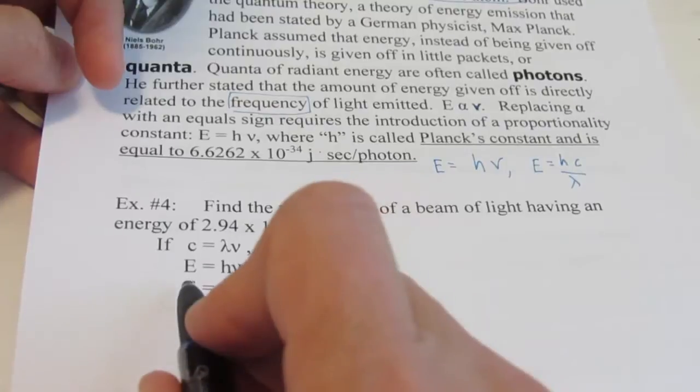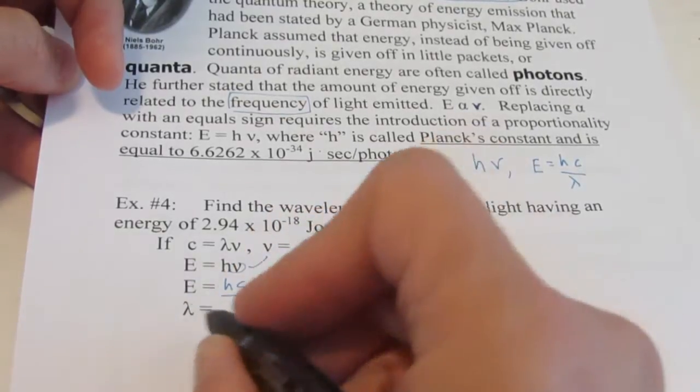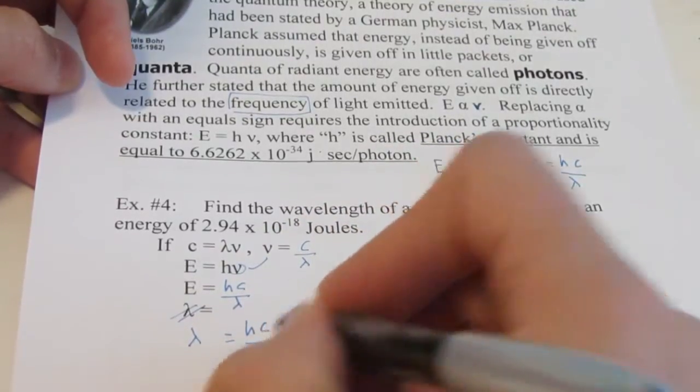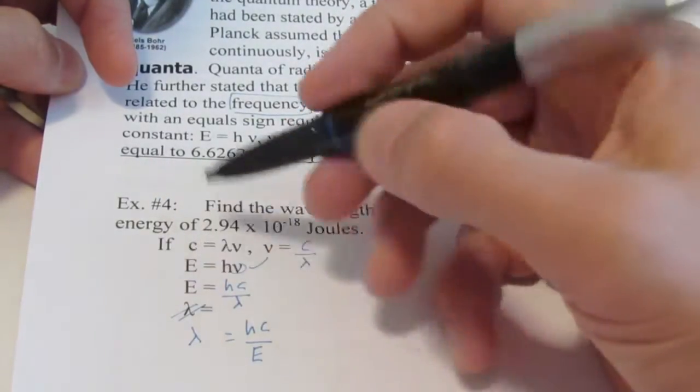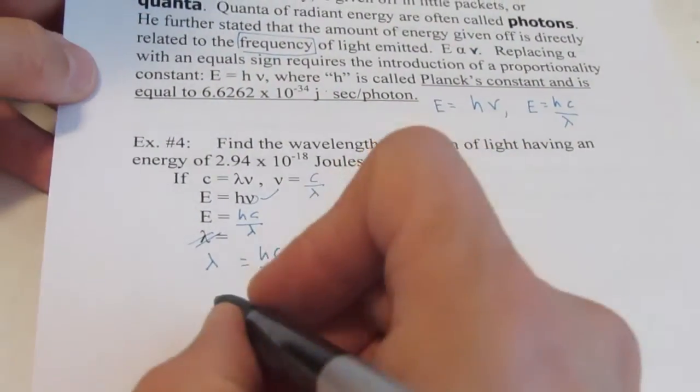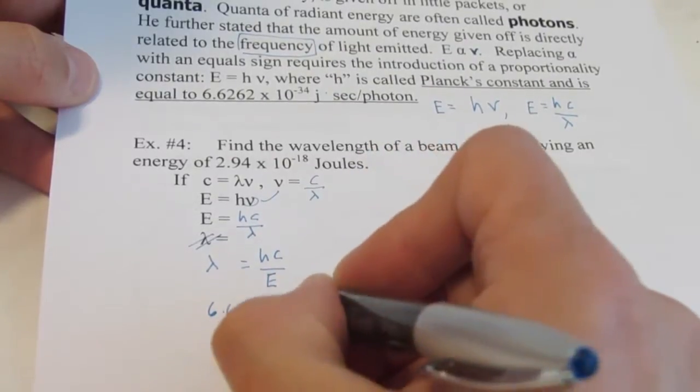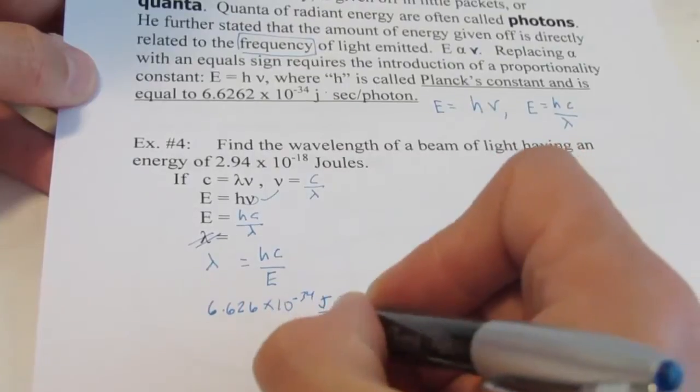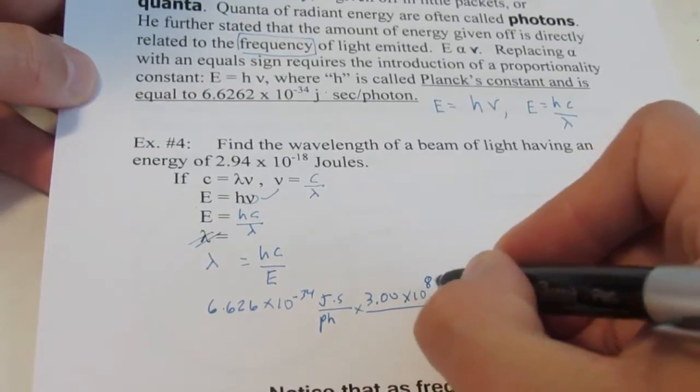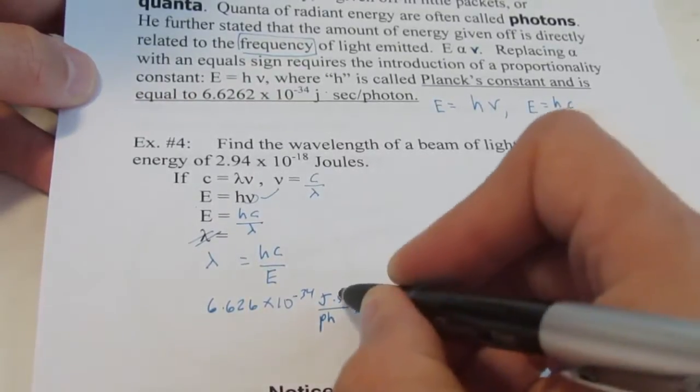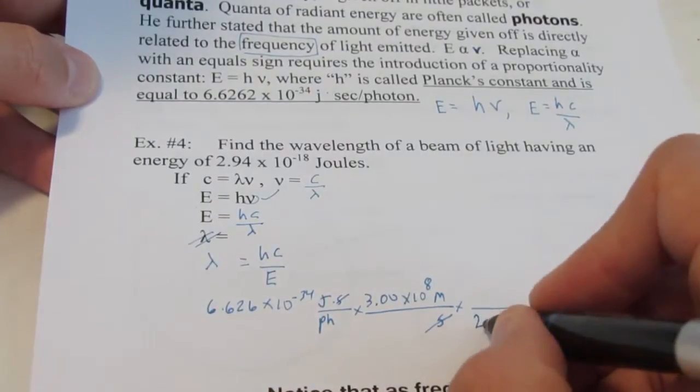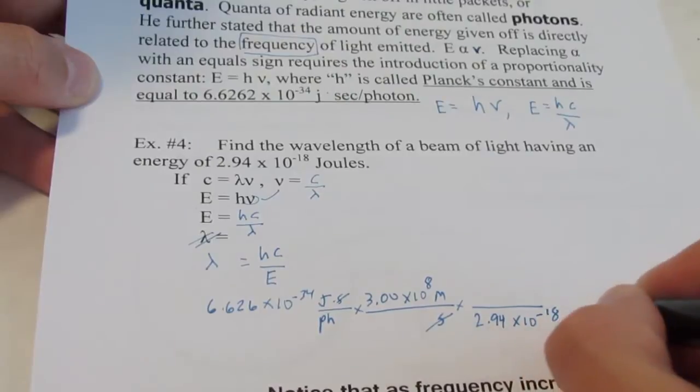If I bring lambda over to this side and bring energy over to this side, lambda would equal HC over E. So, H and C are constants. H is Planck's constant, 6.626 times 10 to the negative 34th joule seconds per photon. The velocity of light, 3.00 times 10 to the 8th meters per second. So our seconds have divided out. And then we're going to divide by the energy, which is given in the problem, 2.94 times 10 to the negative 18th joules. So now joules divide out and we'll have our wavelength in meters per photon.